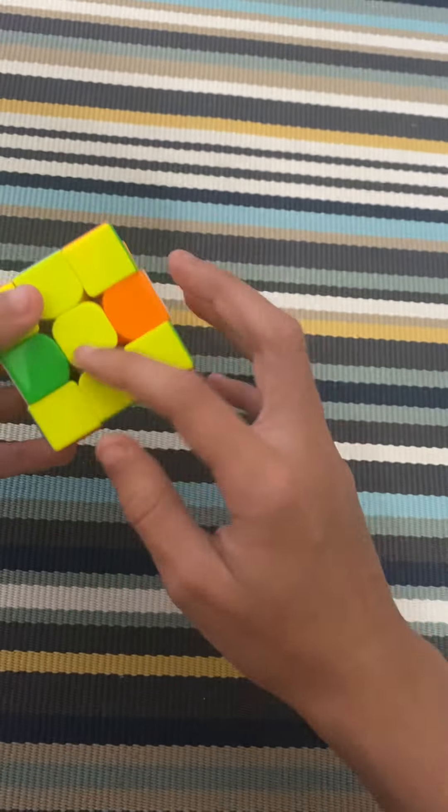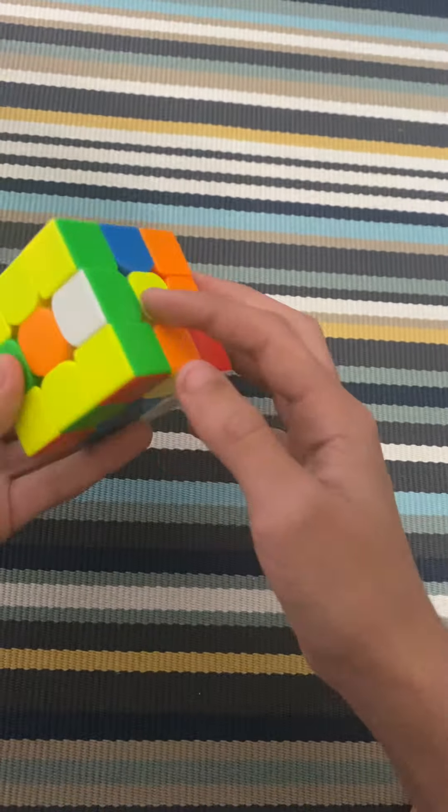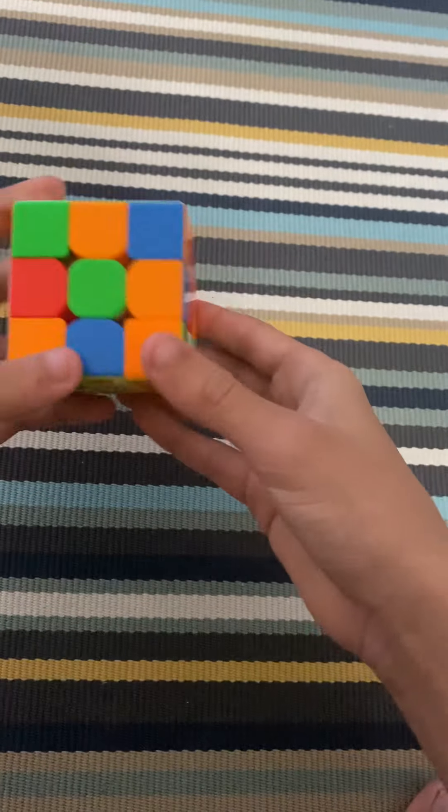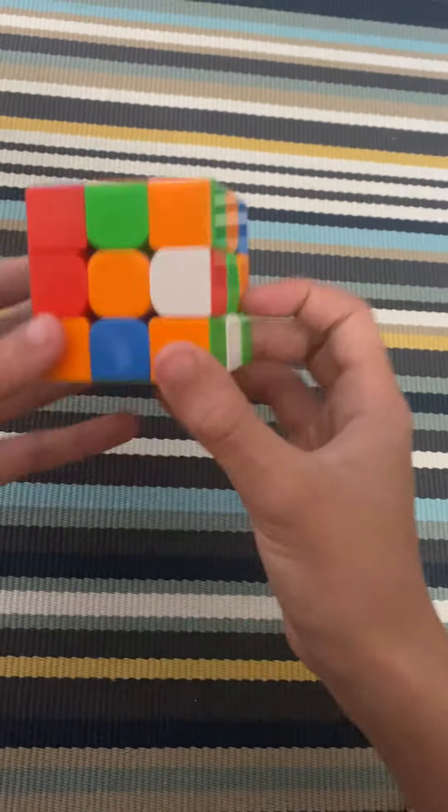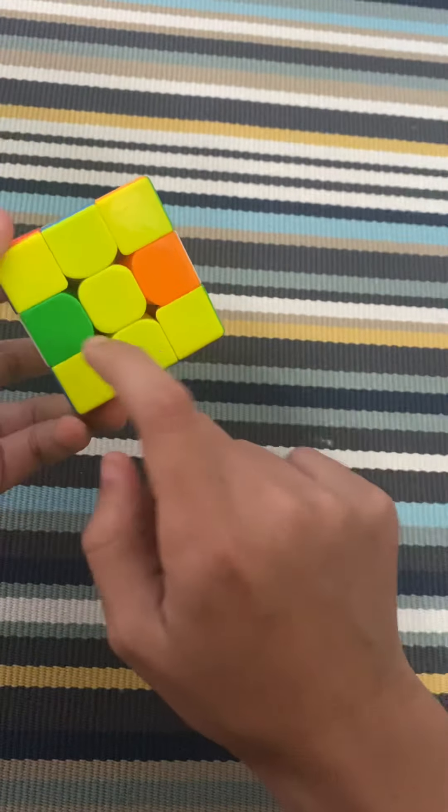It could be there for example, but then you just have to fix the centers after. So yeah, now it's matching. And then we have to do these three edges. You don't have to worry about this edge, just these three edges.